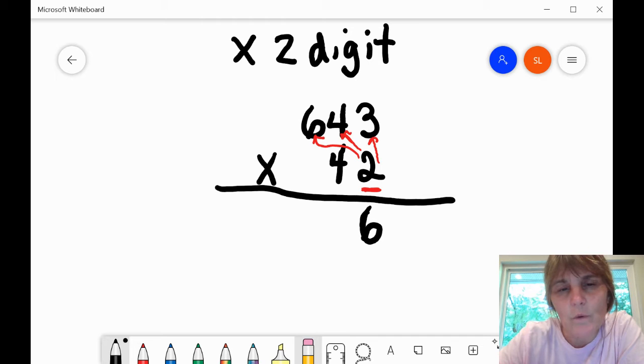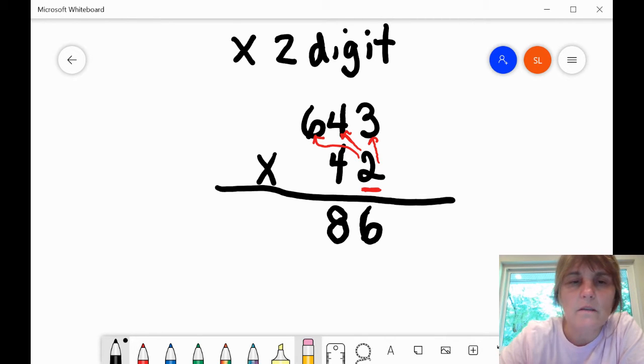Two times four is eight. We write an eight here. Once again, it's a single digit, so we don't need to carry anything. And two times six is 12, and we will write a 12.